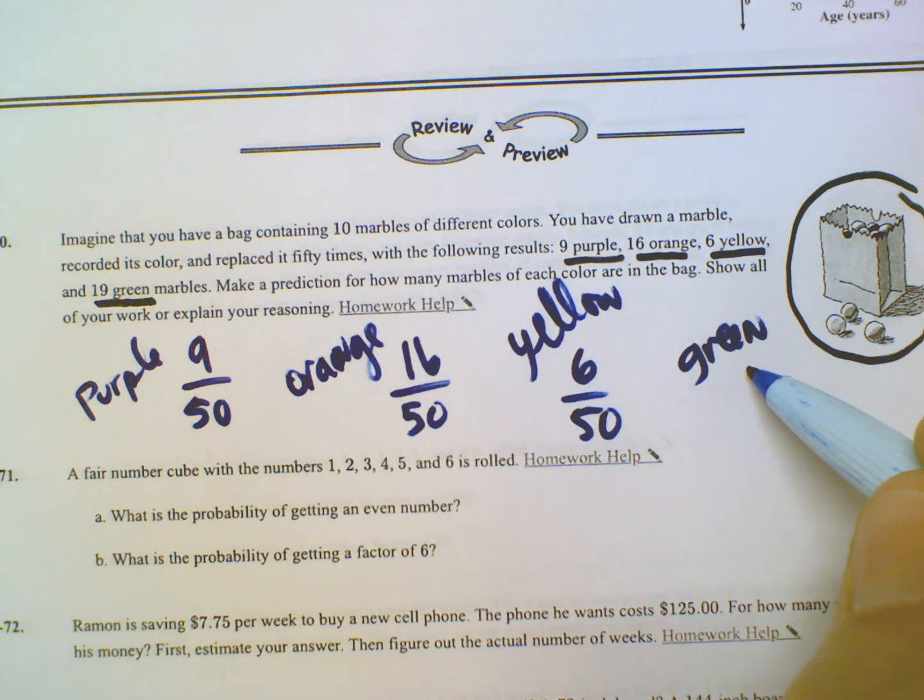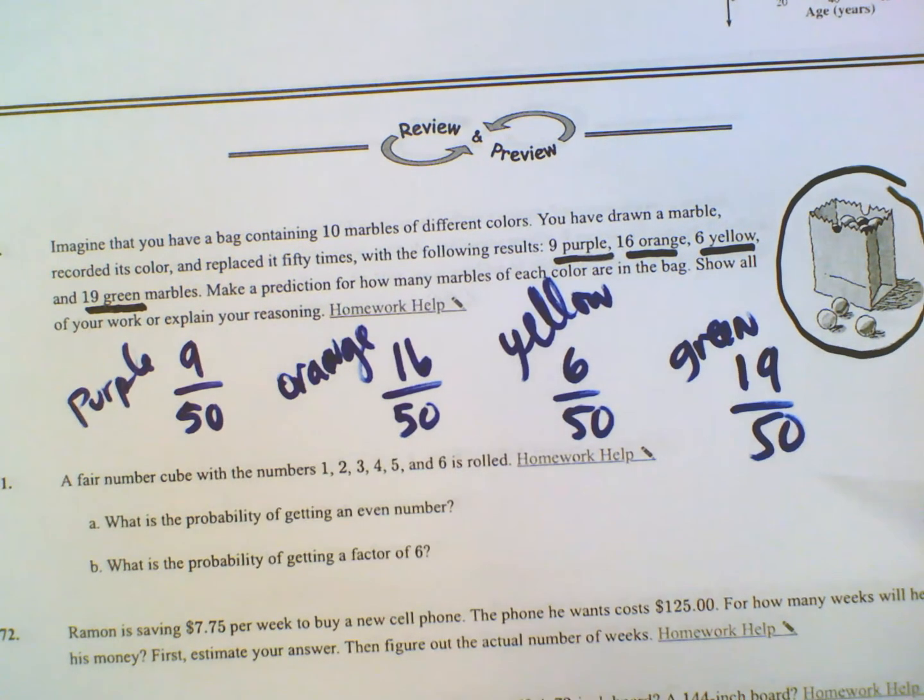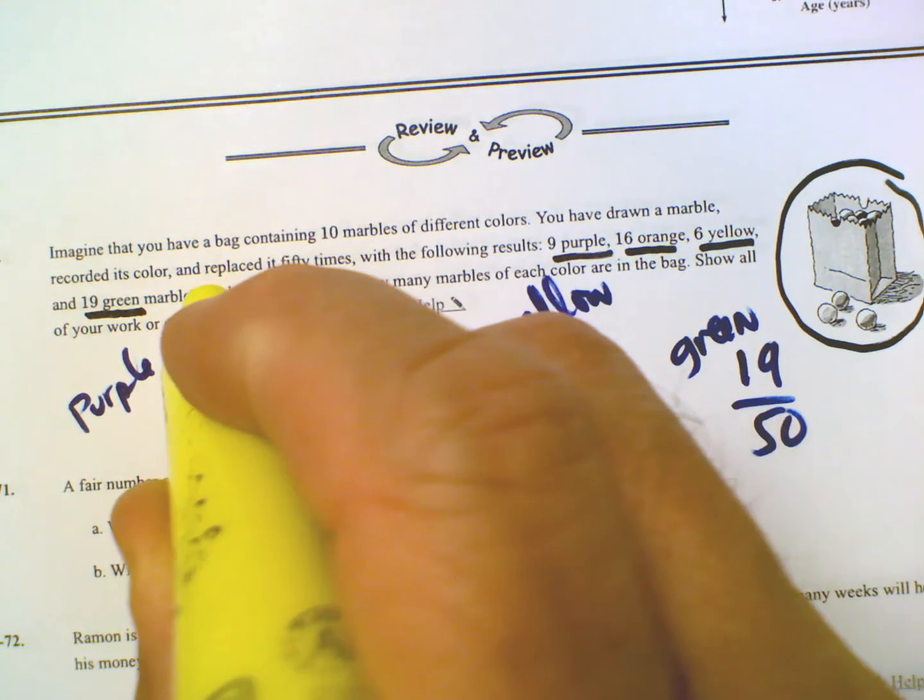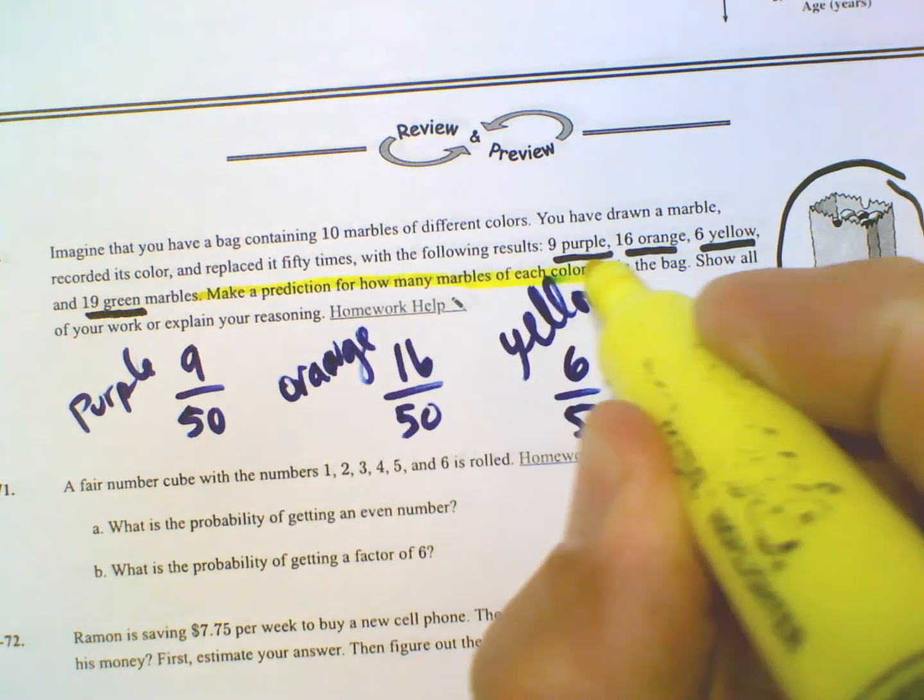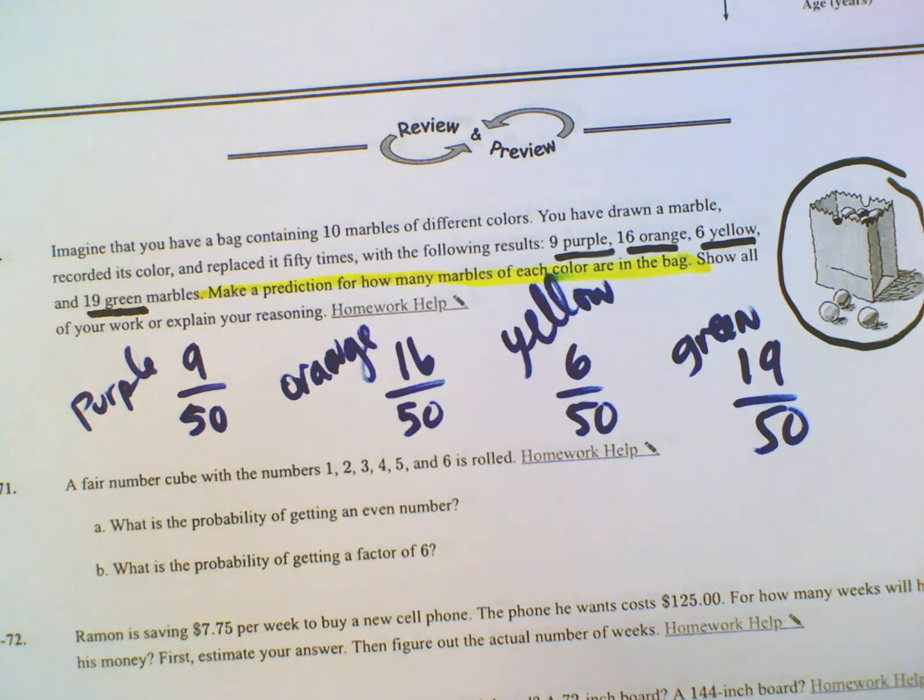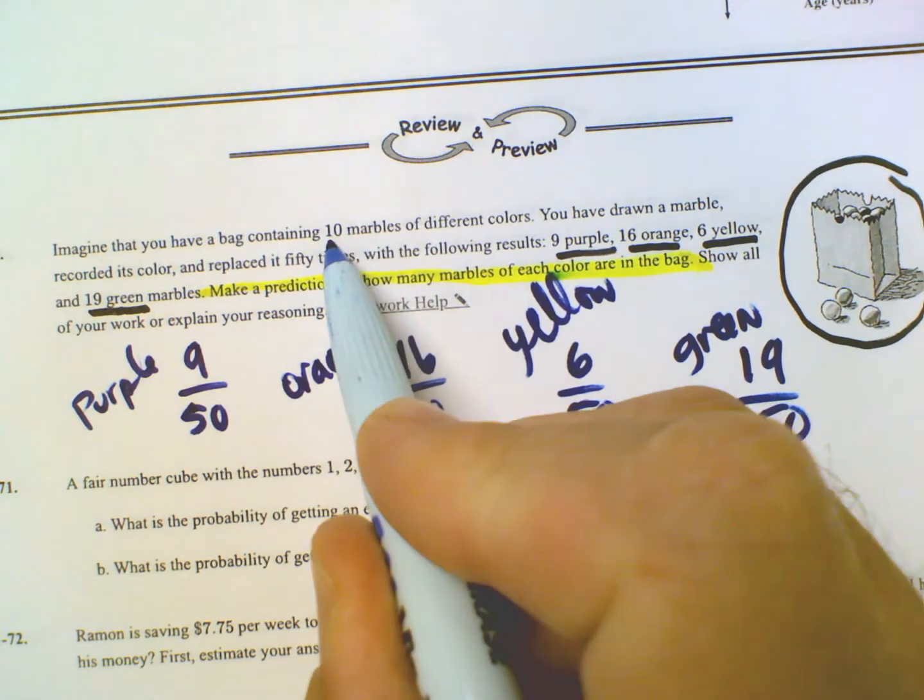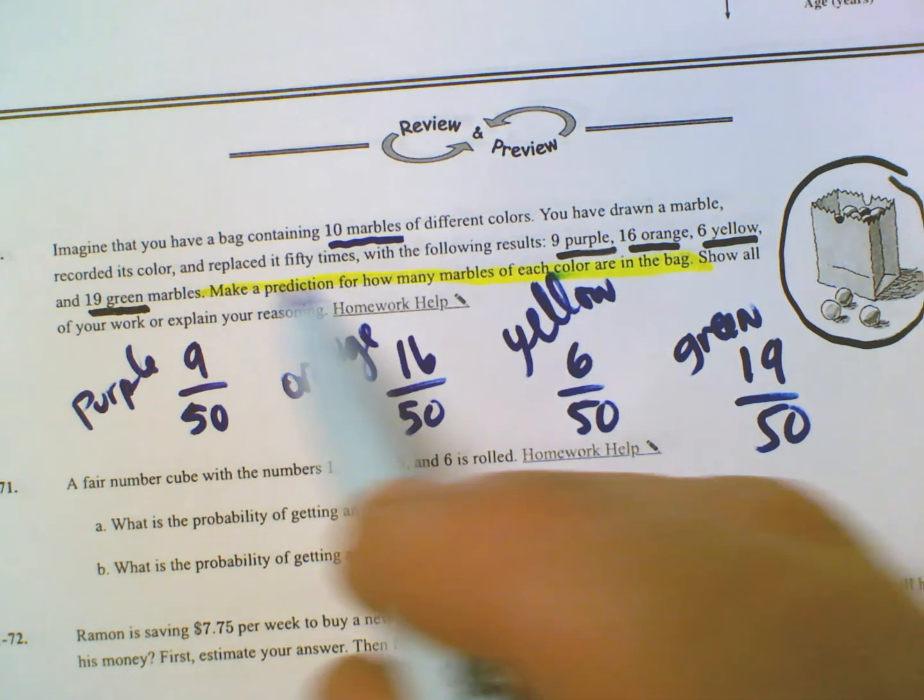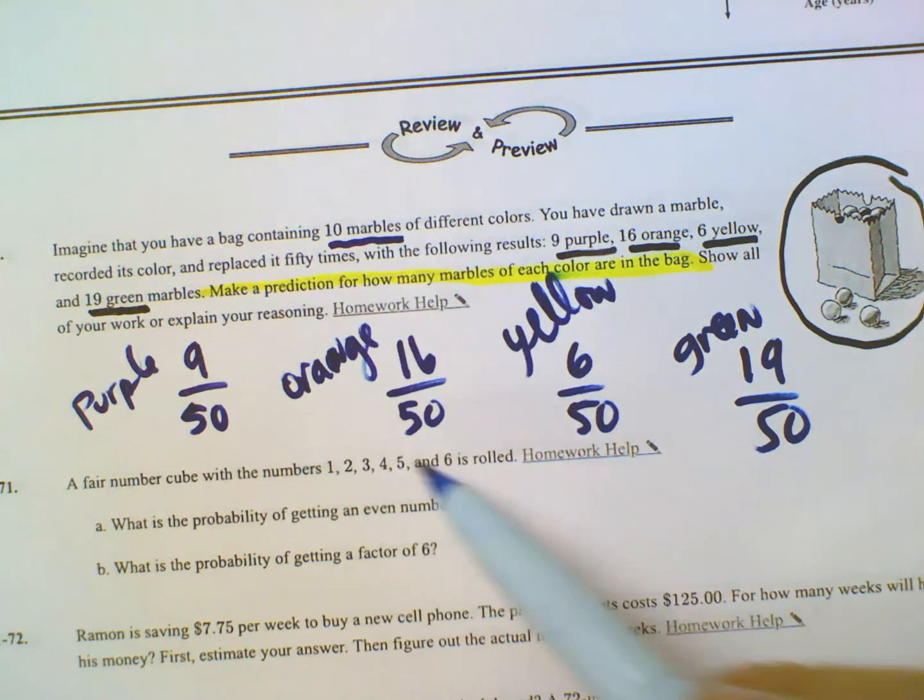And for green, green would have been 19 out of 50. So here's the deal. It's asking us to - this is where it gets to be interesting - it wants us now from our experiment, this is our experiment we did, it wants us to make a prediction of how many marbles of each color actually in the bag. So we know that there's only 10 marbles. I did experiment 50 times, so I need to get all of these in terms of out of 10.